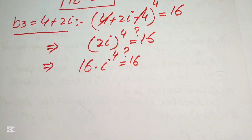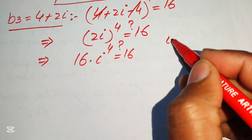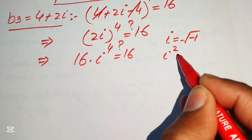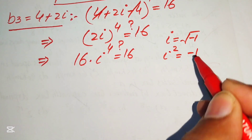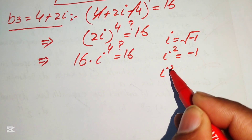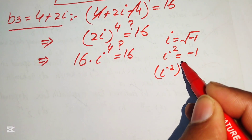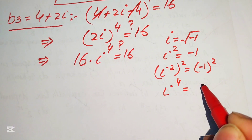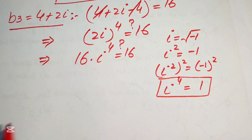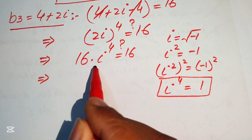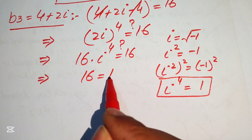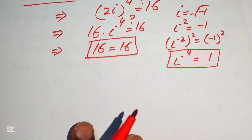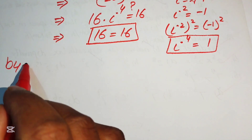We know 2 to the power 4 equals 16. For iota to the power 4: since iota squared equals minus 1, squaring again gives (minus 1) squared equals 1, so iota to the power 4 equals 1. Replacing iota to the power 4 with 1 gives 16 times 1 equals 16. The third root is verified.